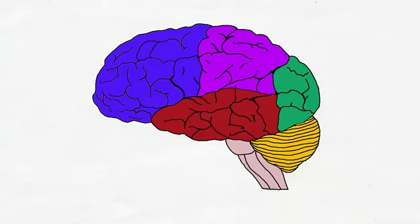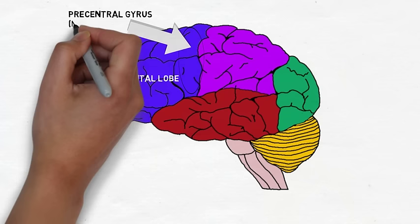The frontal lobes are important for movement and higher order cognition like rational thought, decision making, and planning. This area in front of the central sulcus is known as the precentral gyrus, and it is essential for motor control as it is the location of the primary motor cortex.